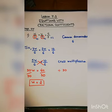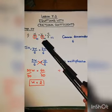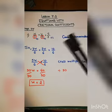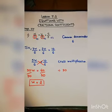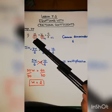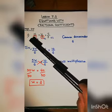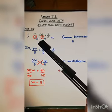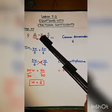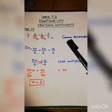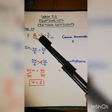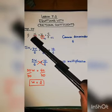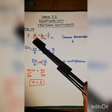In number one, we have w over two plus w over three equals five over three. We understand that we cannot add or subtract any fraction unless we fix the denominators first. The common denominator for two and three will be six.